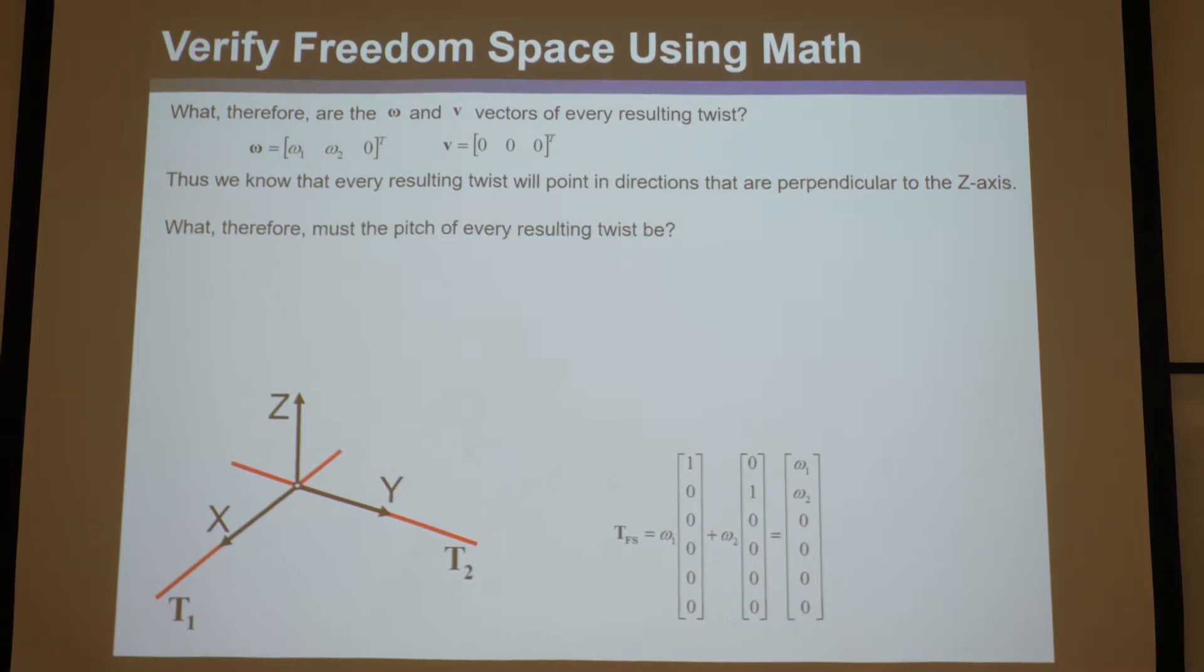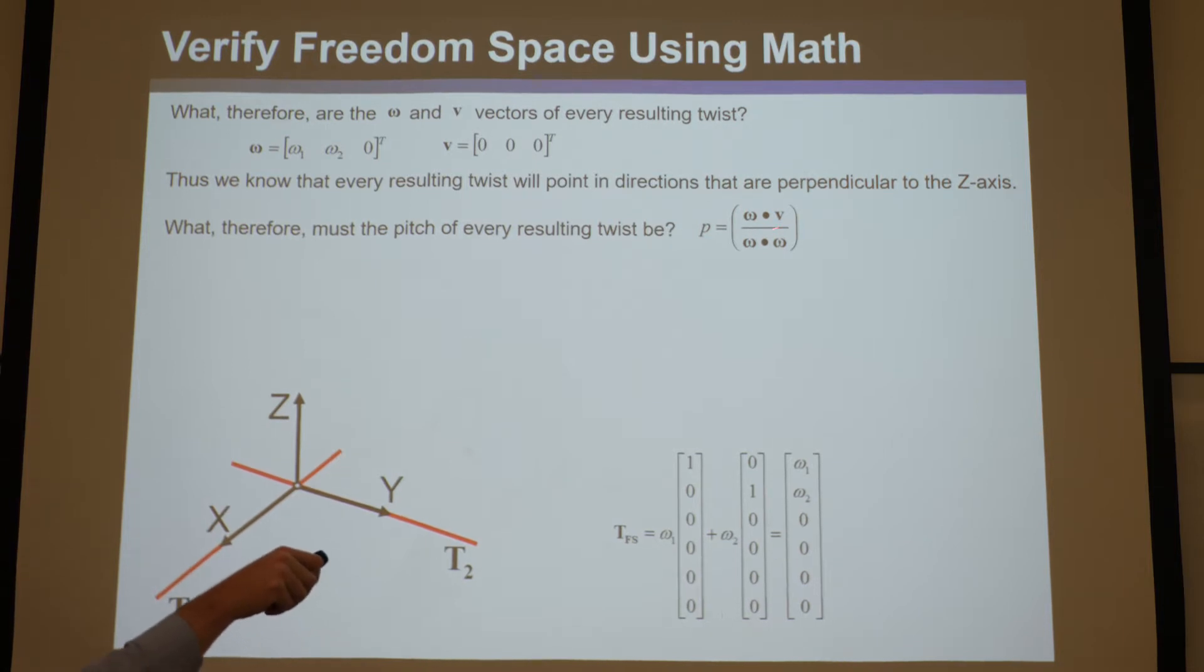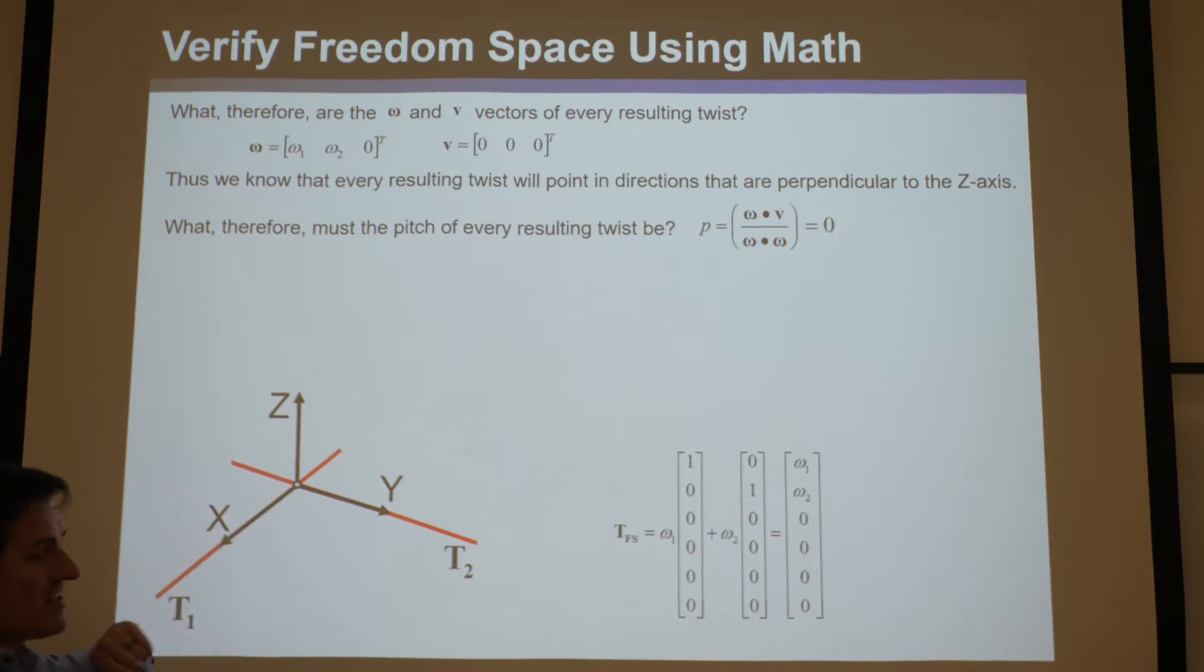Now, if you find the pitch, use this equation. You dot product these and divide it by the dot product of these, and you find that they all equal 0. If you dot product omega with v, obviously v's all 0, it will be 0. So that's another clue. Not only do these two, when they linearly combine, produce twists that are perpendicular to z, lines of action that are perpendicular to z, but they're all going to be red because their pitch is 0, and those are all red rotations. So there's not going to be any translations or screws in this. It's all going to be red rotations.